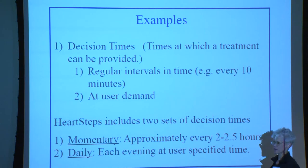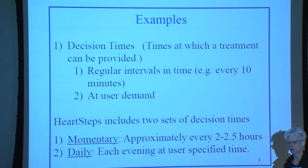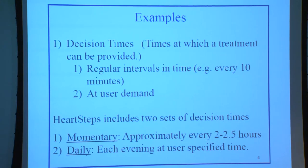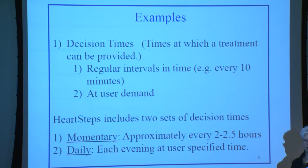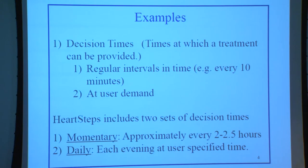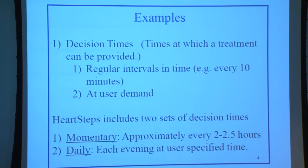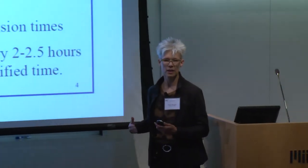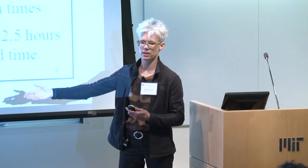First, decision times — these are the times at which I collect information and provide actions. There tend to be two types of decision times in mobile health. The first is at regular intervals in time, which can be at very close intervals. For example, in a recovery support intervention for people who had alcoholism or are trying to stay clean, one goal is to send an alert whenever the person gets within 10 meters of the liquor store where they used to buy liquor.